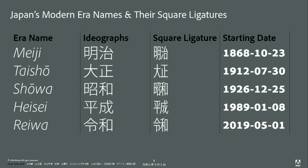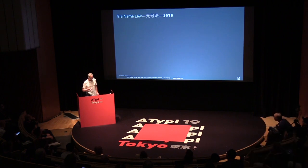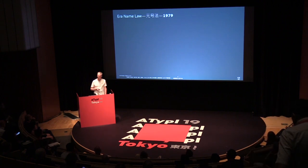If we look at the five modern era names and their square ligatures, we have Meiji, Taisho, Showa, Heisei, and now Reiwa. You can see the two kanji that make up the era names, and the square ligature forms which are compressed left to right. There's actually a law established in 1979 called the Era Name Law that sets forth six criteria for selecting a new era name.